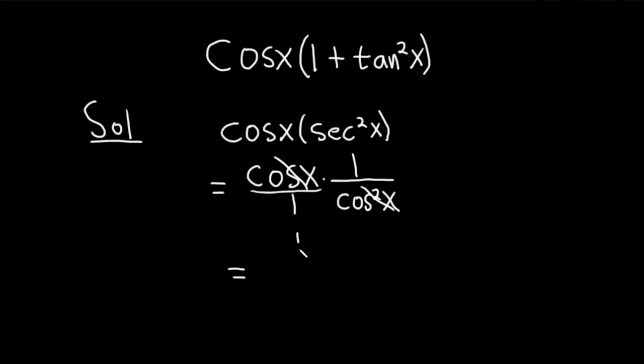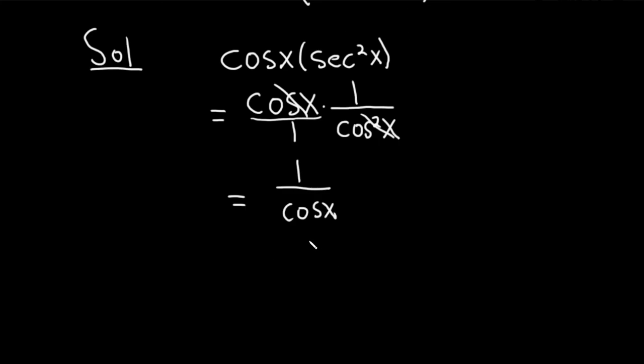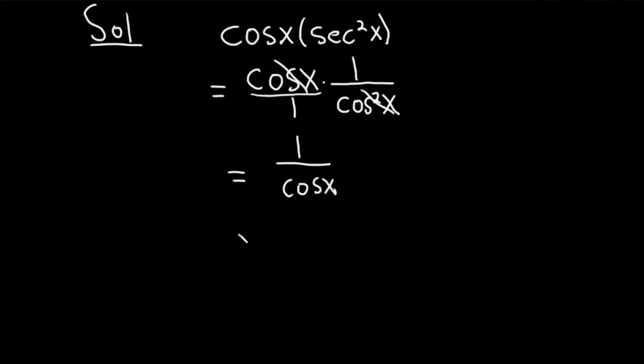Well, this is simply going to be 1 over cosine. And 1 over cosine is the familiar secant function. So this is equal to the secant of x.